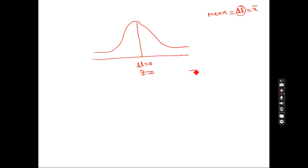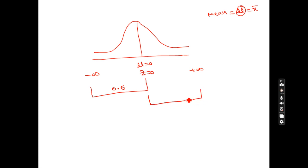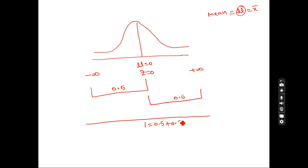The z-value is equal to zero at the center. Going to the right it is positive, going to the left it is negative infinity. From minus infinity to z equals zero, the area is 0.5, and from z equals zero to positive infinity, the area is also 0.5. So this side is 0.5 and that side is also 0.5.